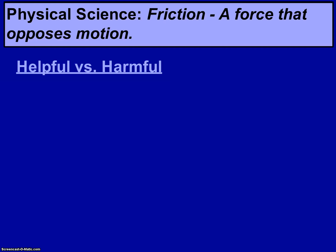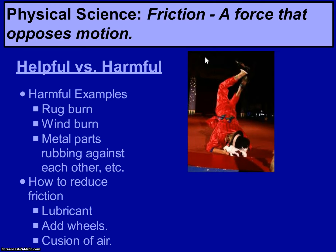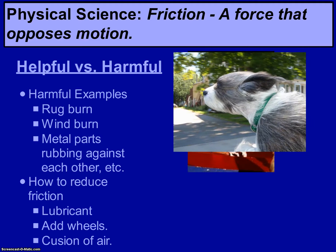Friction is something that can be either helpful or harmful. Harmful examples: rug burn — if you plant your face in the rug, you will get a very nasty scar or burn. Wind burn is another interesting example. Snow skiers or water skiers are most likely going to experience this kind of friction.